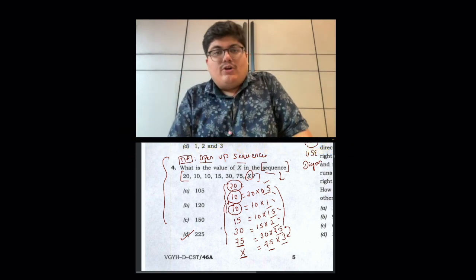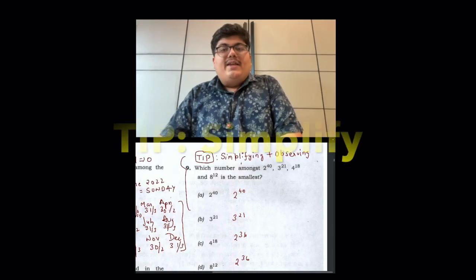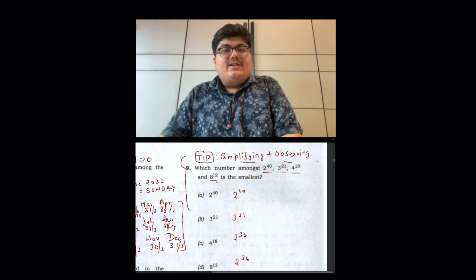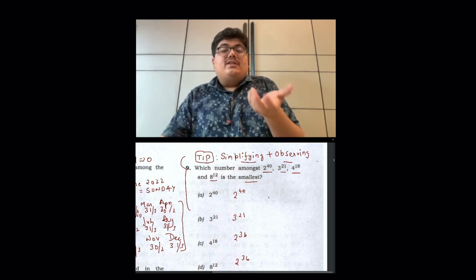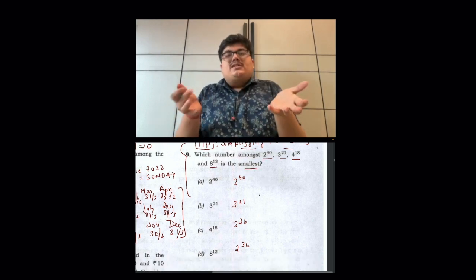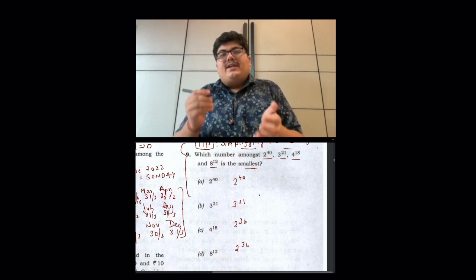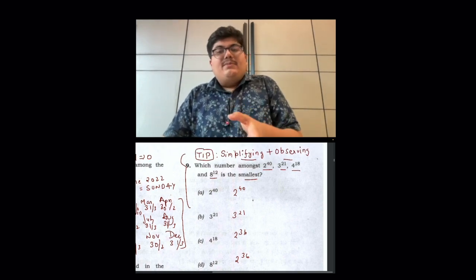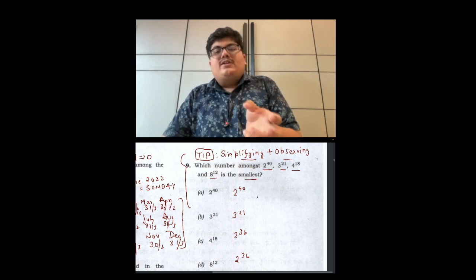Now we look at the next question. The tip is simplifying and observing. What is the question? The powers given are: 2 power 40, 3 power 21, 4 power 18, 8 power 12. If you ask us, what is the smallest number? Even in the set of numbers, we will compare it. The powers given, simplify it. Simplify means that the lowest factor is in the term.